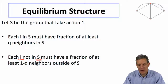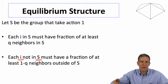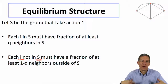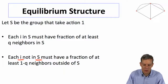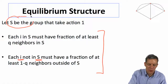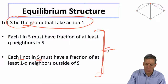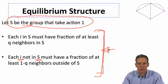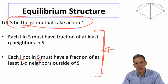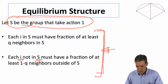Everyone not in S has to have at least a fraction one-minus-Q of their neighbors outside of S, meaning fewer than Q of their neighbors are in S. So for the set S to be the group that takes action one — for that to be an equilibrium — both conditions must hold. This characterizes the set of pure strategy equilibria: S is an equilibrium if and only if these two conditions are satisfied.